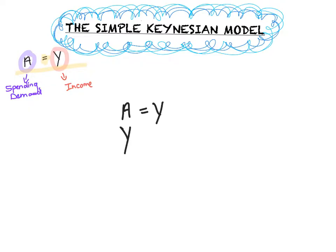If A equals Y, we can also say that Y equals A, meaning income is a function of our spenders. So our spenders are C plus I, plus but wait.